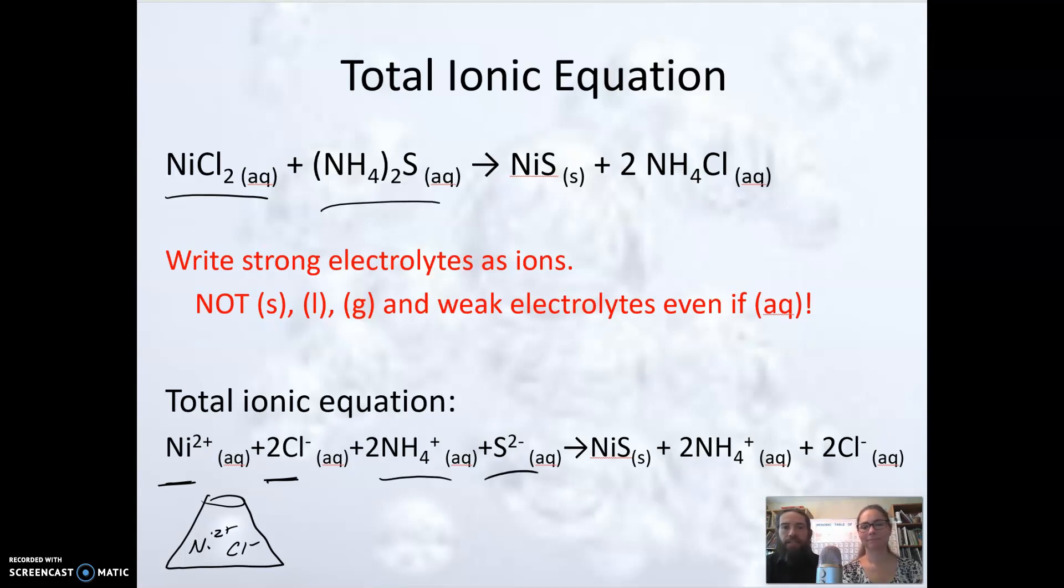Now I'm looking to the products. I've got nickel sulfide, which is marked as a solid. So this is not soluble. And remember to be a strong electrolyte we have to be a soluble ionic compound. It is an ionic compound, but it's not soluble. So that stays as a solid. And lastly the ammonium chloride, another soluble ionic compound. We can break apart into ions and have this total ionic equation.